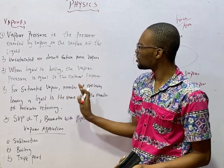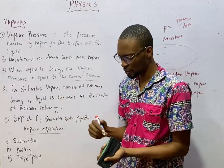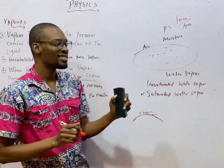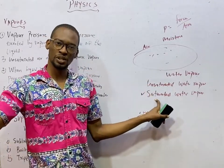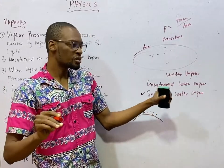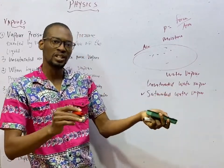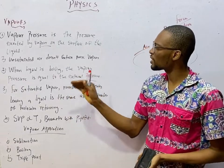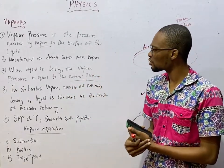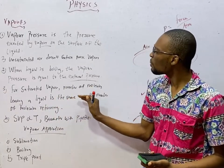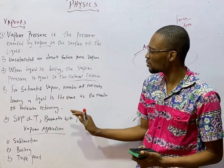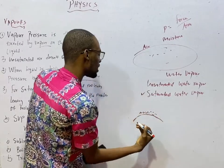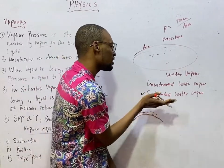When liquid is boiling, the vapor pressure is equal to atmospheric pressure. Boiling point of any substance is the temperature at which the saturated vapor pressure is equal to atmospheric pressure. Once the saturated vapor pressure of that liquid is the same as the atmospheric pressure, boiling will occur. When liquid is boiling, the vapor pressure is equal to the standard pressure. This is true. For saturated vapor, the number of molecules leaving the liquid is the same as the number of molecules returning.